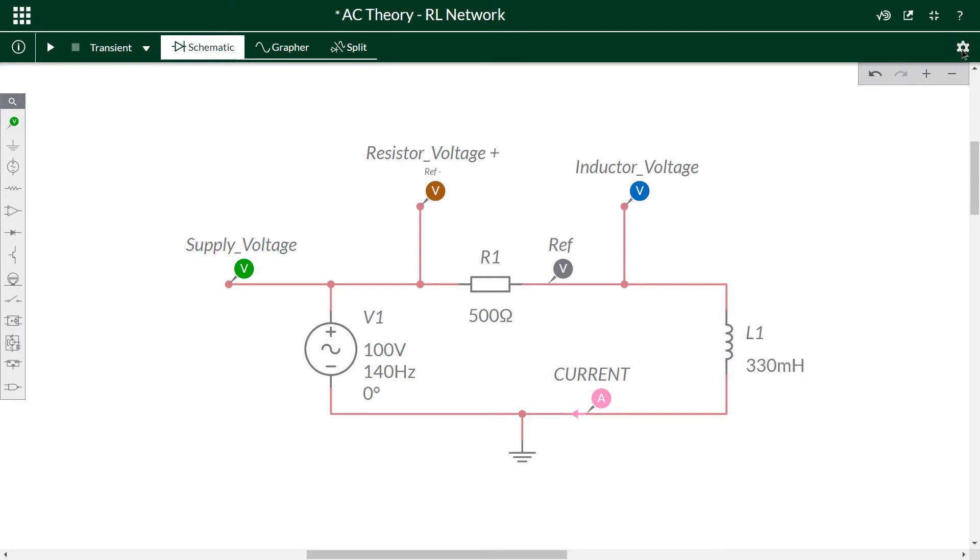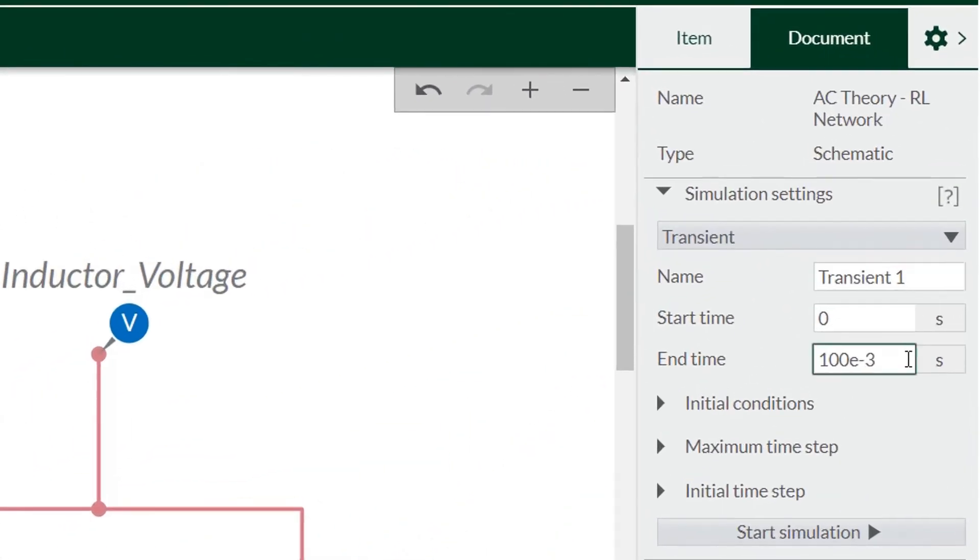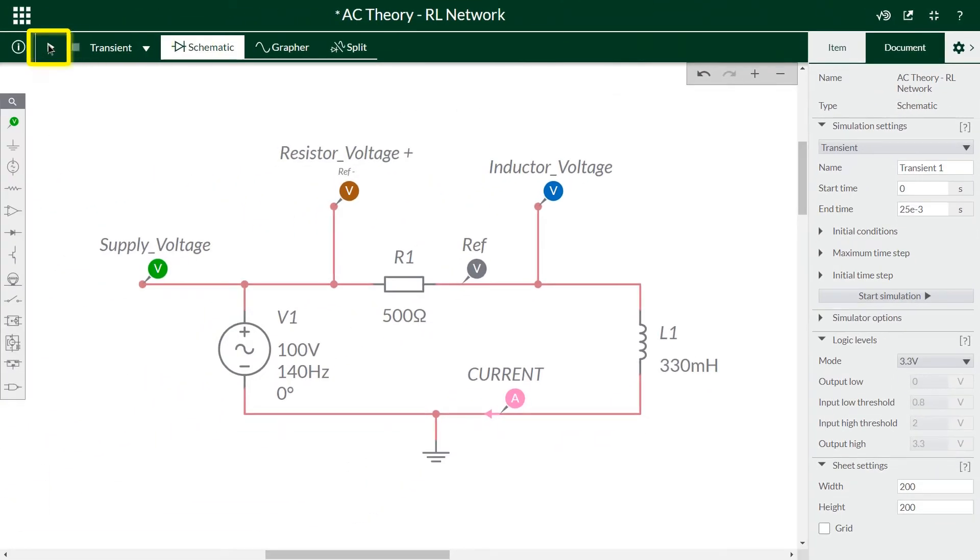So on Multisim I will click the settings cog, then set the transient simulation time to be 25 milliseconds, which is around 4 cycles of a 140 Hz signal, but you can set it for longer if you want. Click the S for seconds and then click simulate.